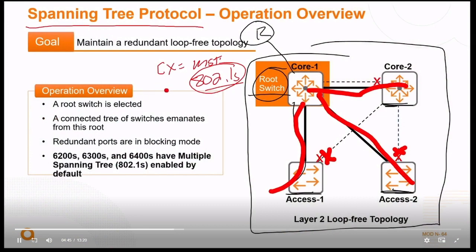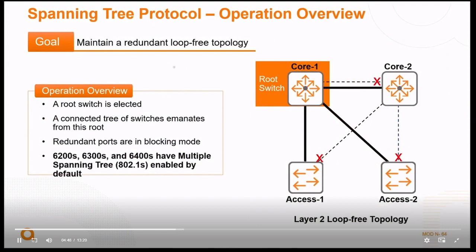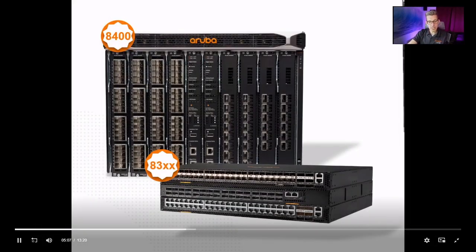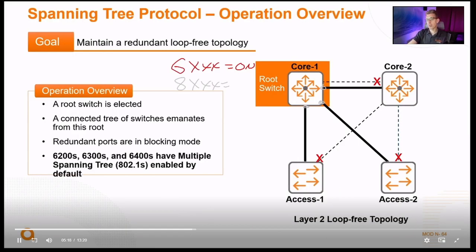With the 6000 series switches, the feature of spanning tree is enabled by default. So any 6200 or 6300, this spanning tree protocol is already running and operating. We can plug in redundant links without fear of a network crashing at layer 2. With the 8000 series, it's not enabled by default. However, the 8000 series has all of its interfaces routing — they're not switching. If you're routing on your interfaces, the risk isn't there unless somebody makes it a switch port. Spanning tree is actually off on the 8000 series. You can enable it if you choose, but you're not in any danger unless you change your port assignment.